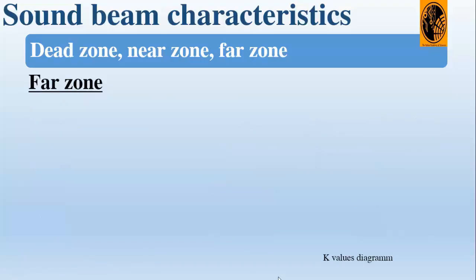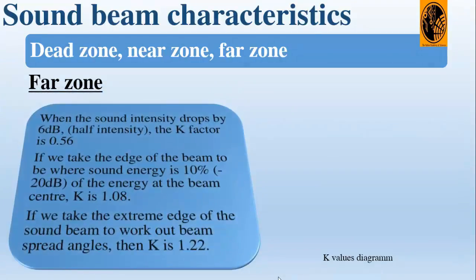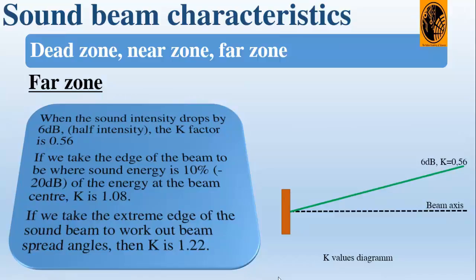The values of K may be worked out using this diagram. When the sound intensity drops by 6 dB, which is half the intensity, the K factor is approximately 0.56.